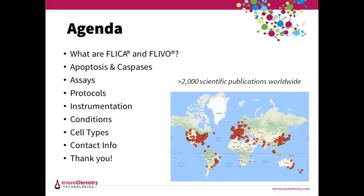Today I'll tell you about how these reagents work by going over some data with different cell types and models, and explaining the experiments and what instruments were used for detection. These powerful reagents give you a lot of options when designing your experiments, and I'll compare them and show you different ways to use them. These products have been used by researchers all over the world and are highly cited in over 2,000 publications across many different cell types and animal models. We'd love to hear from you about any experiments you're doing, and if you need details or have questions about how to set anything up or determine your controls, please contact us.